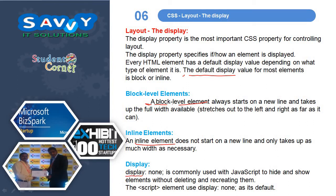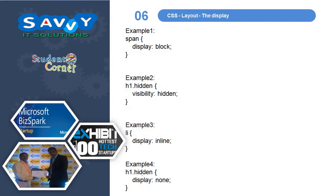Display none is commonly used with JavaScript to hide and show elements without deleting and recreating them. The script element uses display none as its default. For example: span with display block, h1.hidden with visibility hidden, li with display inline, and h1.hidden with display none. These are the different things we use.